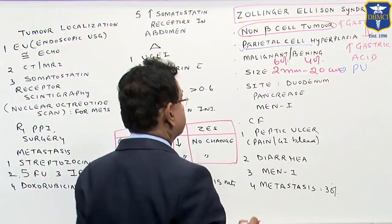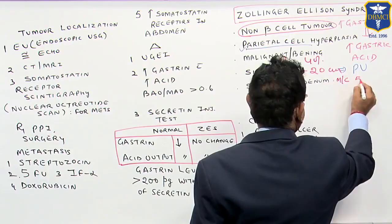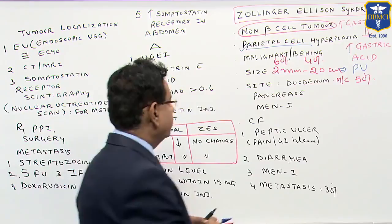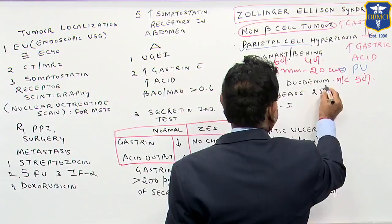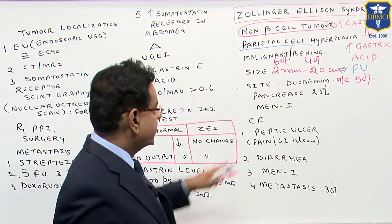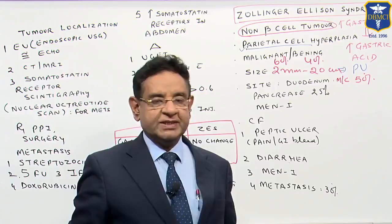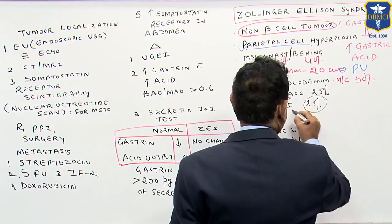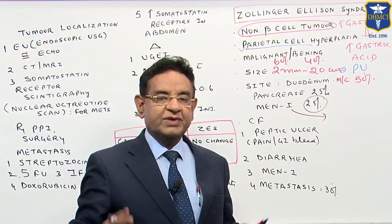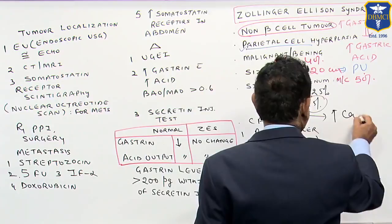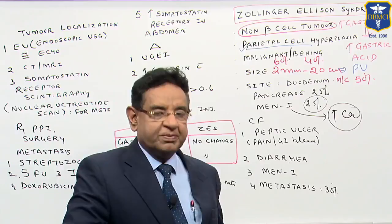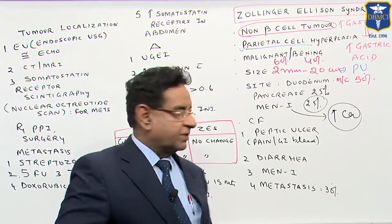The most common site is the duodenum, in around 50 percent of cases. In around 25 percent of cases, it is located in the pancreas. It may be a part of MEN1 syndrome — multiple endocrine neoplasia 1 — in around 20 percent of cases. One hallmark of MEN1 is that if you get hypercalcemia in a case of Zollinger-Ellison syndrome, you should always suspect multiple endocrine neoplasia 1 syndrome.